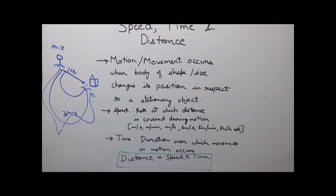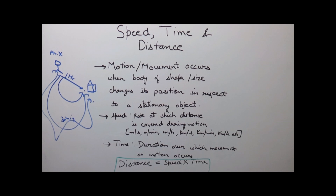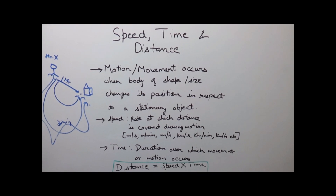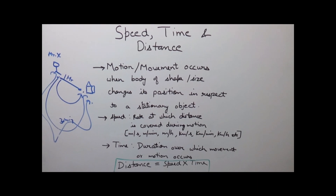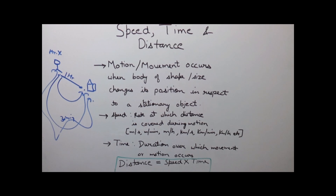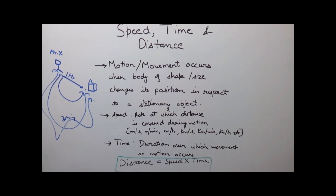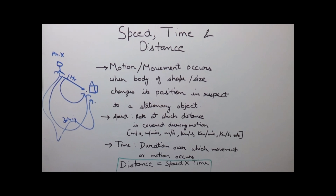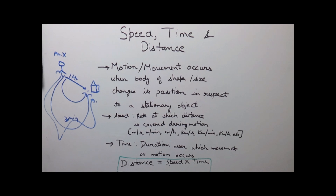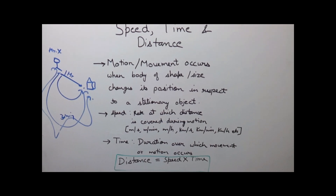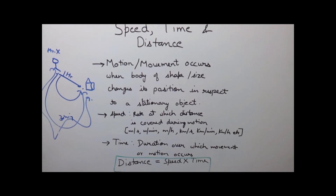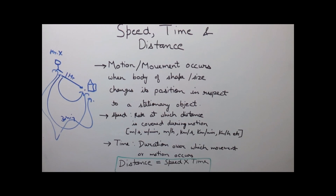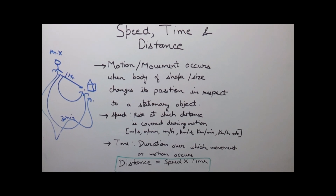Different types of problems which are based on speed, time and distance can be on relative motion, circular motion, problems related to boats, problems related to races, or problems related to clocks, and so on. Now let us tell you some more concepts related to speed, time and distance.